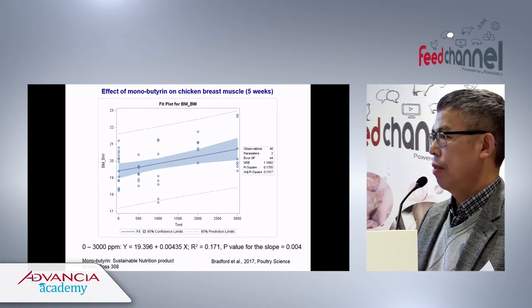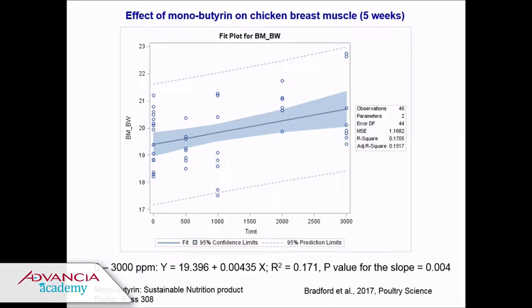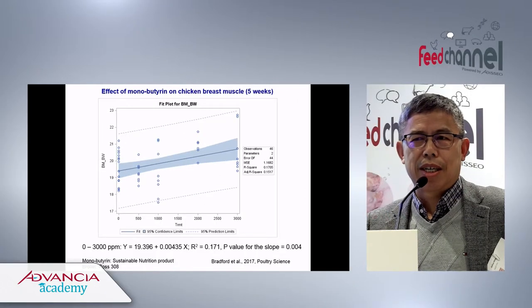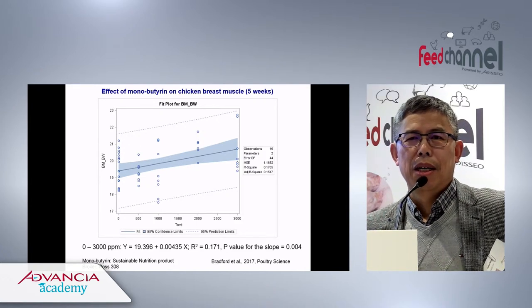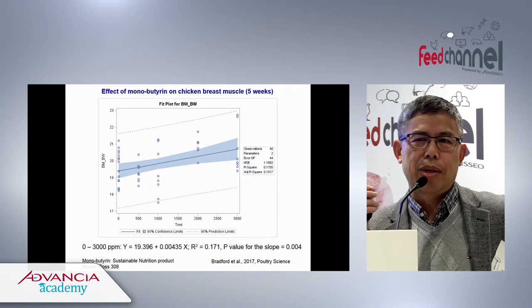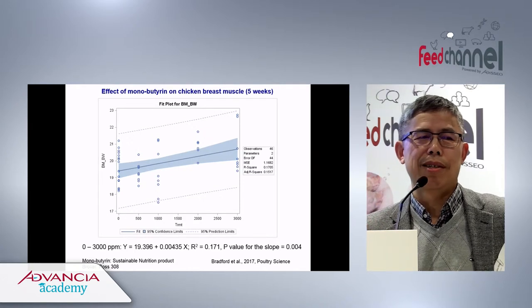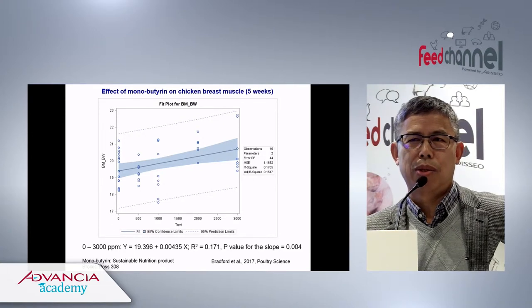There were dose-response effects: we tested 0, 500, 1000, 2000, and 3000 ppm supplementation of butyrate, and in the breast muscle weight there were correlations, even if not always statistically significant. When I talked to Steve Leeson, he pointed out that even producing 50 grams more breast muscle per bird in production would mean a lot of profit to producers — a point very well taken.